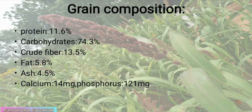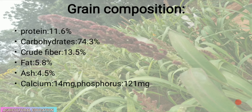The grain composition of barnyard millet is: protein 11.6%, carbohydrates 74.3%, crude fiber 13.5%, fat 5.8%, ash 4.5%. The minerals present are calcium 14 mg and phosphorus 121 mg.